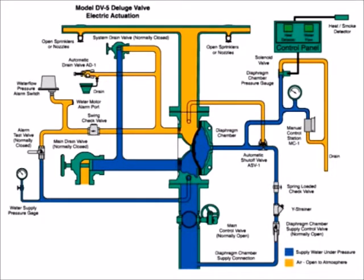Air open to atmosphere is in three locations, shown here in orange. One, the sprinkler pipe system. Two, the water alarm switch and automatic drain valve trim. Three, the trim which connects the automatic shutoff valve.